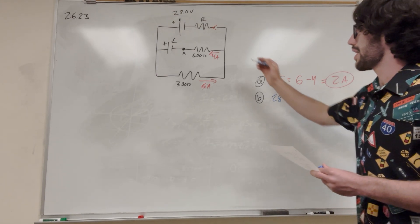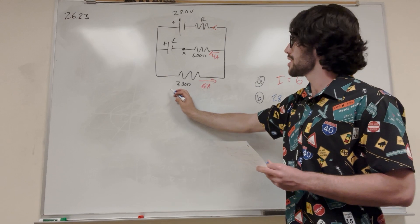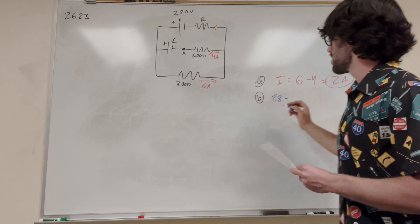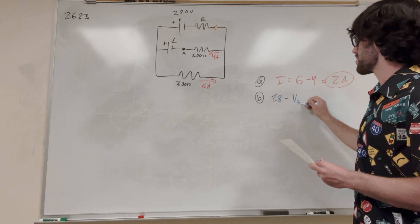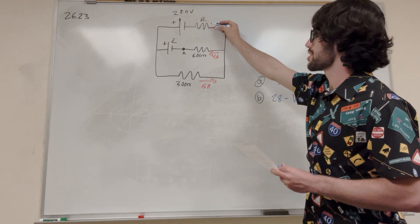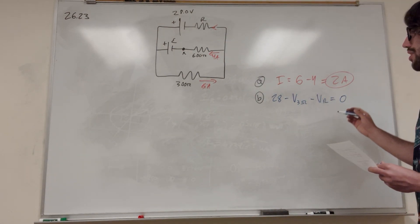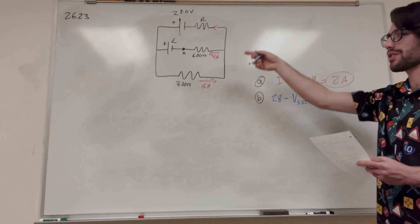We're going to go around the circuit. So the current is going this way, so it's going to go through this resistor. So it's going to lose voltage here at the 3 ohm resistor. And then it's going to go here, and it's going to lose voltage at this resistor. And then it's going to be equal to 0. We just go through the loop, and it's equal to 0.